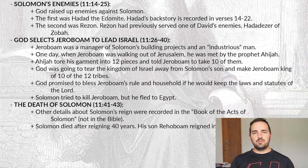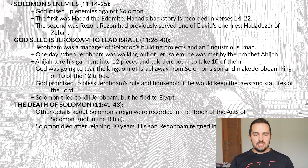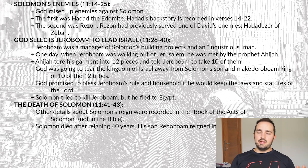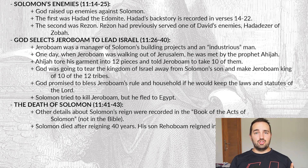That takes us to verses 14 through 25. God starts raising up some enemies against Solomon. God raised up enemies like a guy named Hadad, an Edomite — Hadad's backstory is recorded in verses 14 through 22. The second enemy was a guy named Rezin, who had previously served under one of David's enemies, Hadad Ezer of Zobo.